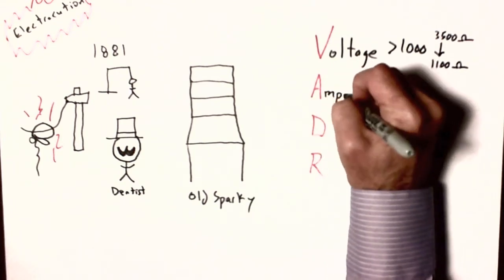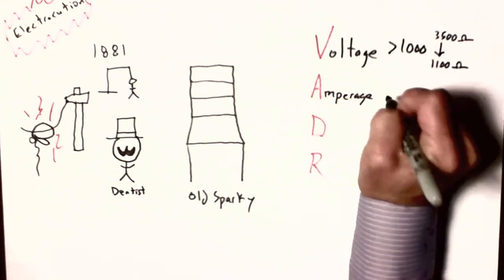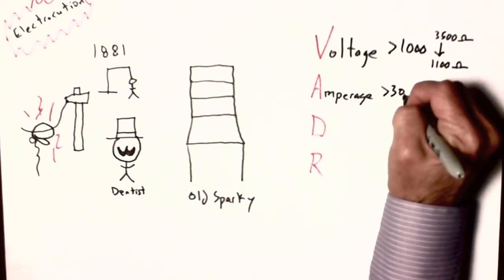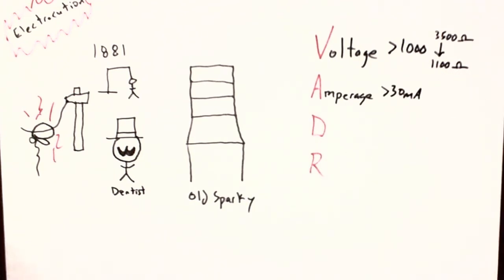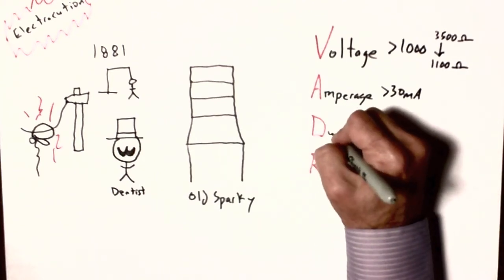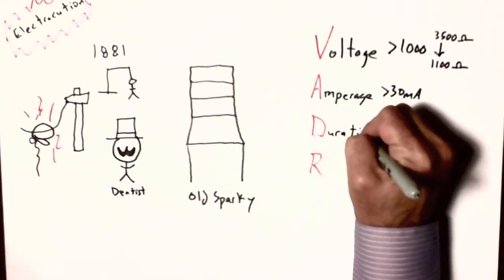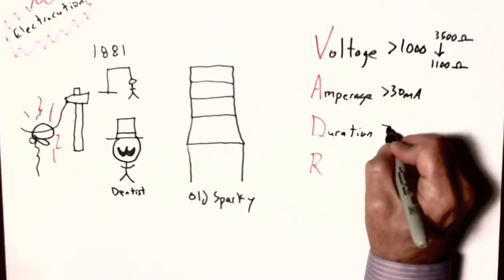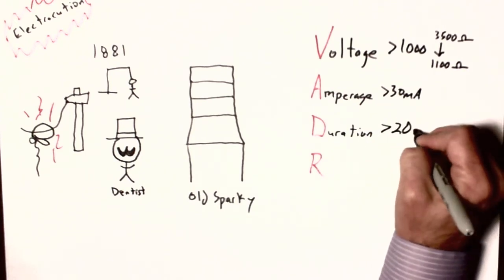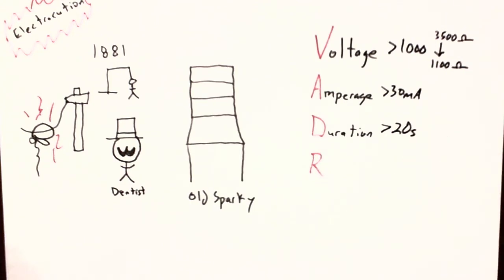The next thing you need is high current. You want in excess of 30 milliamps, because at that current, the muscles in your heart clamp, and you can no longer pump blood. Next, you need a sufficient duration, typically in the neighborhood of 20 seconds or longer. Although, the states of the US, which is the only country in the world that practices electrocution, other than the Philippines during the American occupation, typically do repeated cycles, just to make sure.